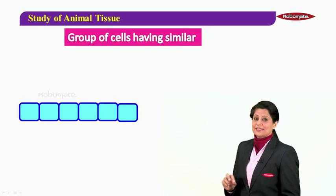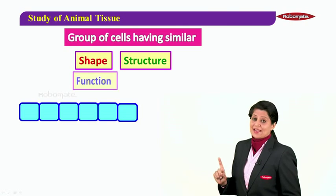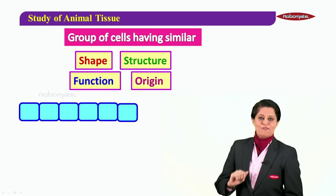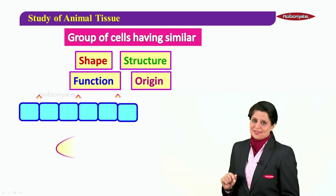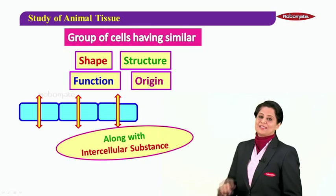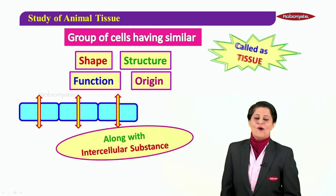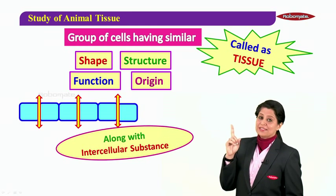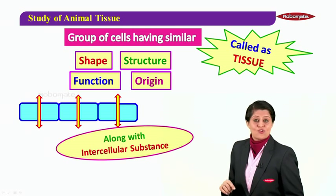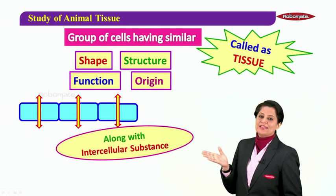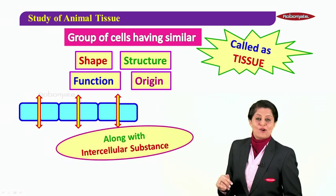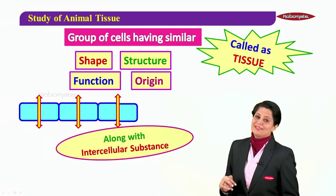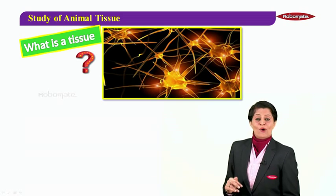Specifically, we are talking about a group of cells having similar shape, structure, function, and also origin. Along with that, the intercellular substance which is present — that together we call a tissue.